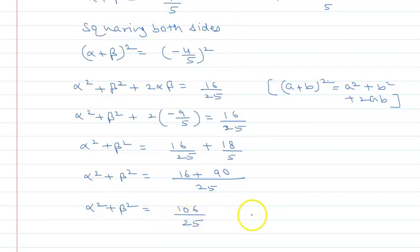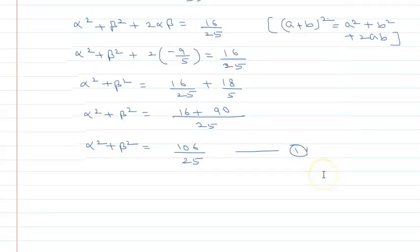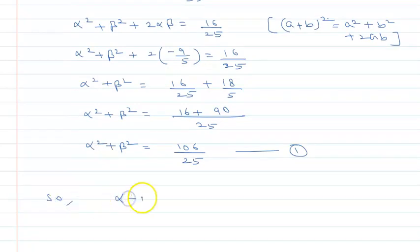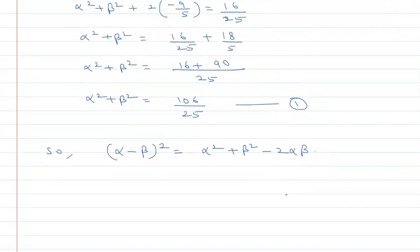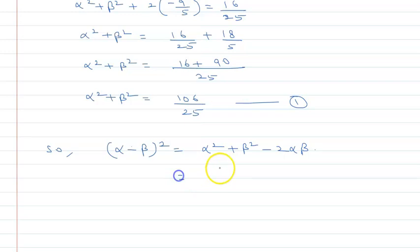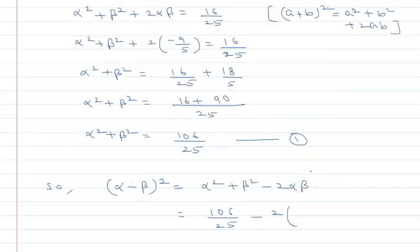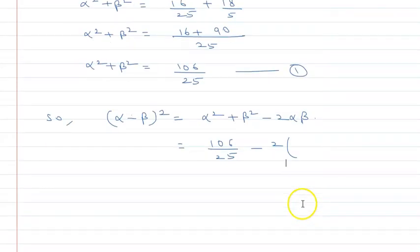So alpha squared plus beta squared equals 106 upon 25. Now to find alpha minus beta, I use the identity: alpha minus beta whole square equals alpha squared plus beta squared minus 2 alpha into beta. Substituting: 106 upon 25 minus 2 into minus 9 upon 5.